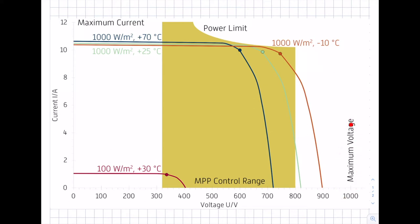We must verify that the maximum voltage of the PV generator is smaller than the limiting voltage of the inverter. On the other hand, looking at the y-axis, there is also a maximum current. In this case, the inverter has a maximum current of 12 amperes. The maximum current of the inverter limits the number of strings you can interconnect.